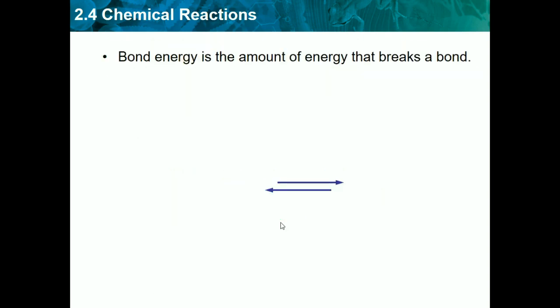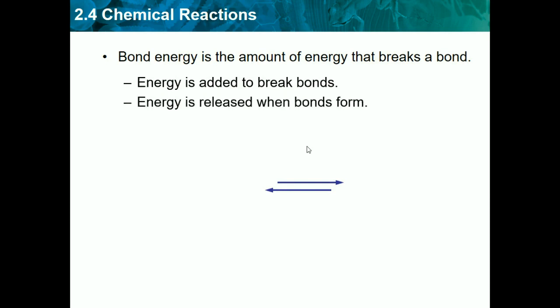Bond energy is the amount of energy that breaks a bond. Energy is added to break a bond, so you have to add energy into it to break a bond. Energy is released when bonds form, which is the opposite of breaking bonds.